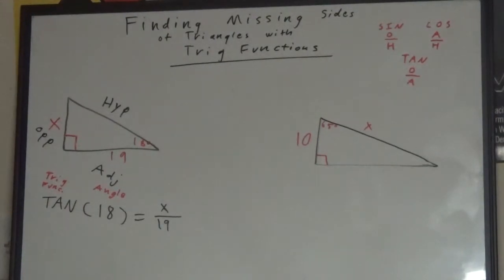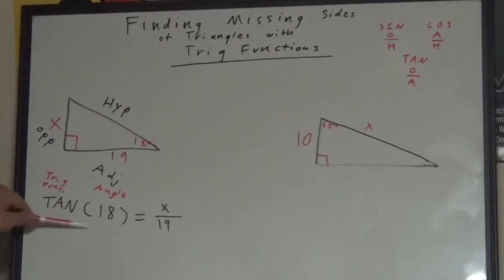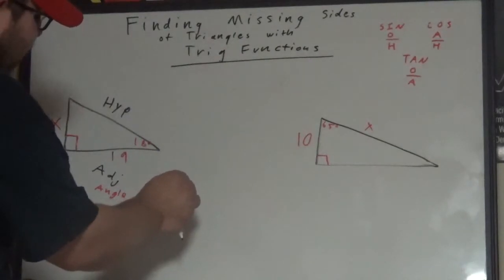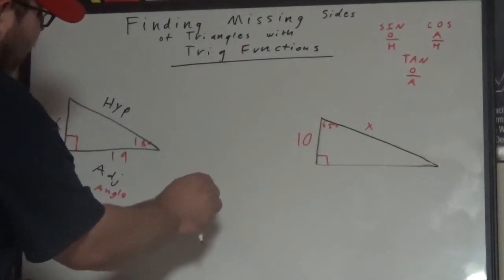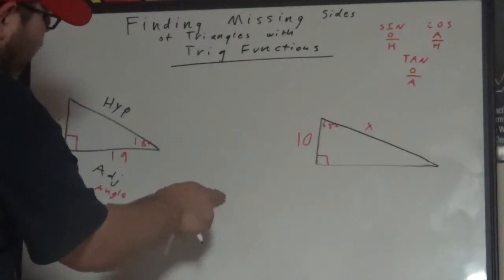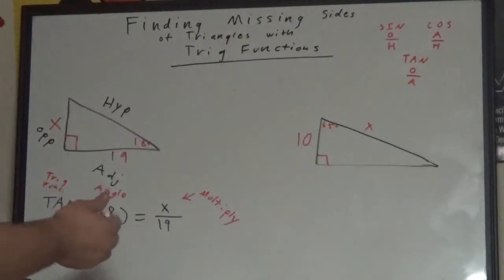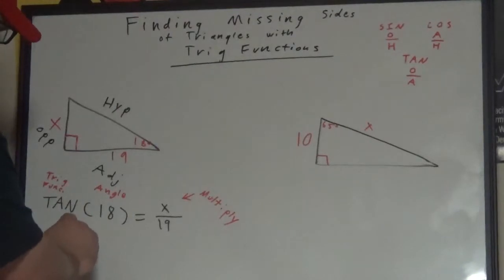Now, we solve this as a regular equation. On one side, we have the single value, tangent 18. And on the other side, we have x divided by 19. This is a one-step equation where we look at what operation is taking place, which is division, and we do the opposite, multiplication. However, as a shortcut, I always like to say, if the x is on top, you multiply.